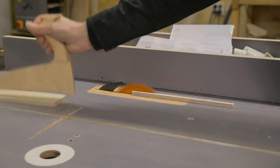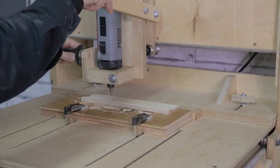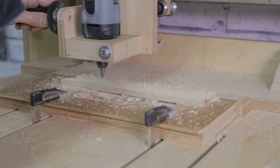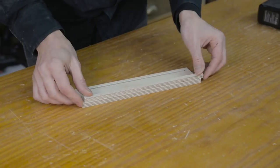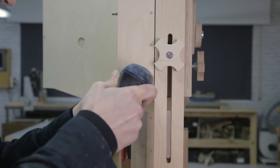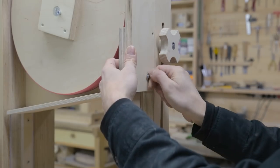With a table saw I machine these rebates on a piece of plywood. Here I bore a hole for a screw that will act as a guide. I put a self-locking nut in it.